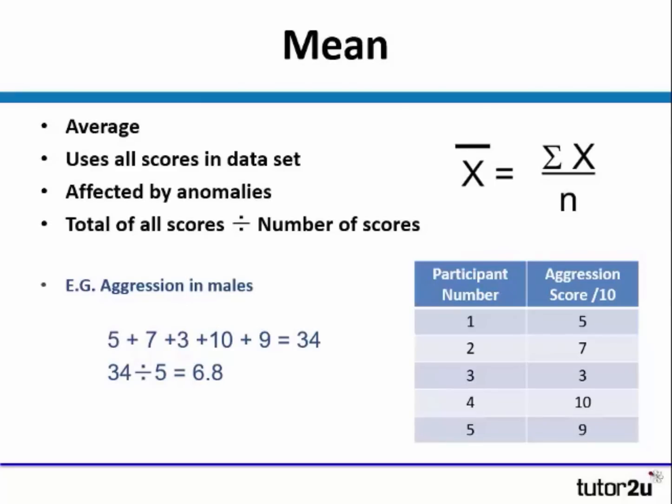The mean is the average and utilises all the different scores within the data set. Because it does this, if you have a particularly high score or a low score, these anomalies can affect the data. The way in which we calculate the mean is finding the total of all the scores and then dividing that by the number of scores in the set.